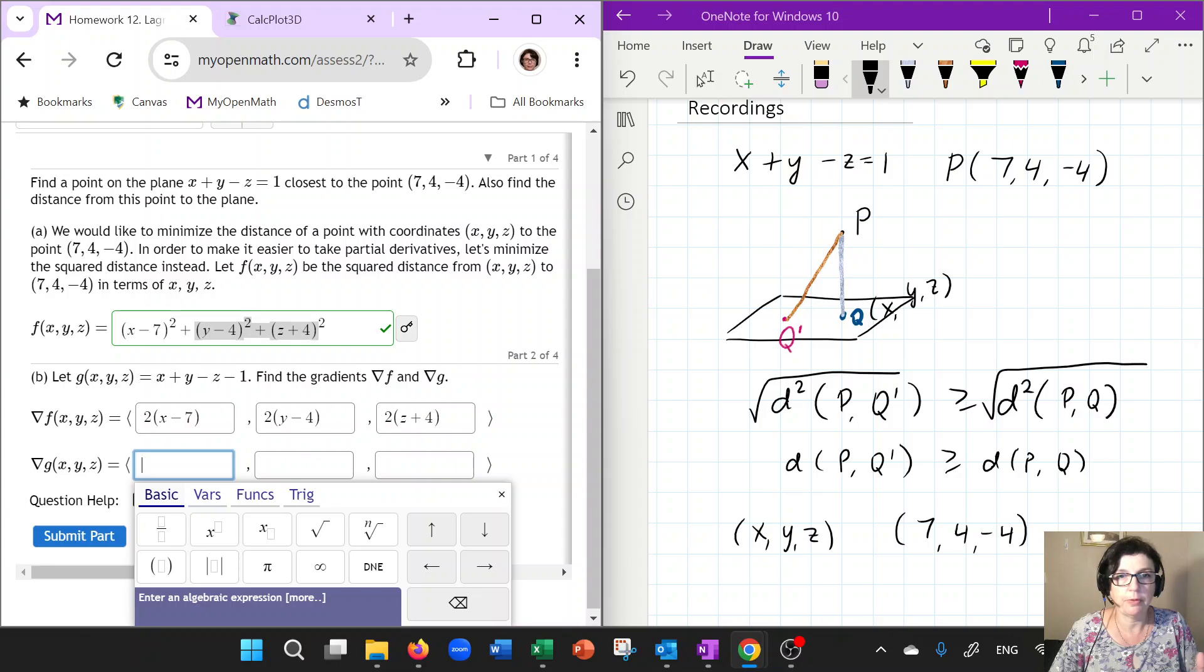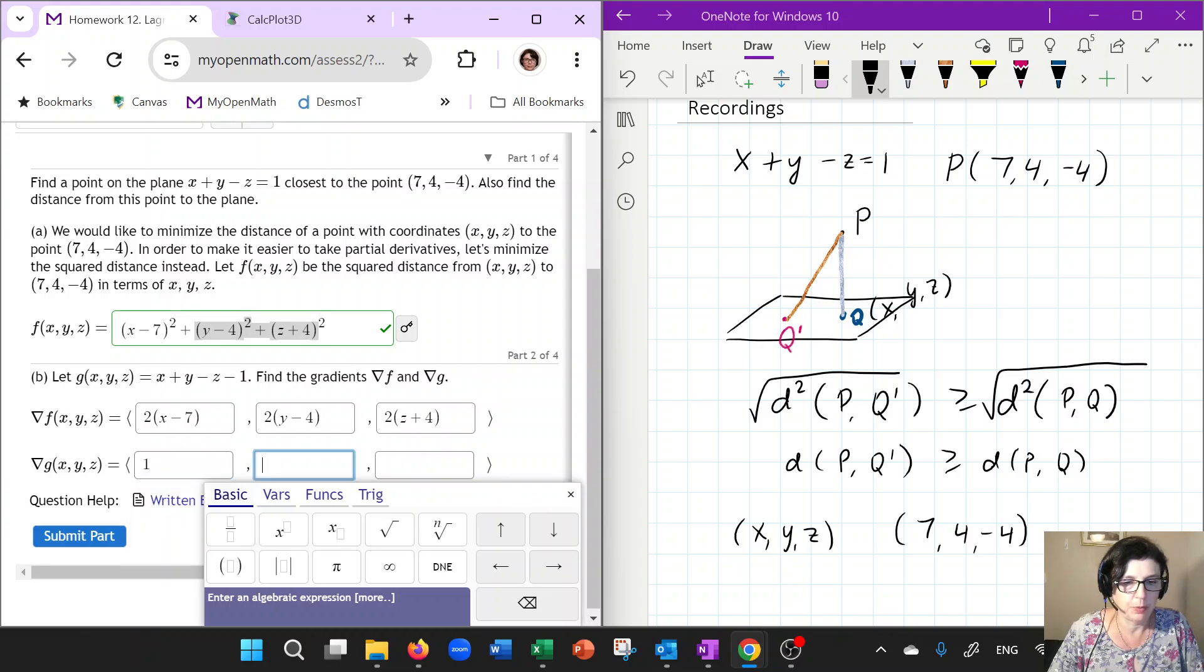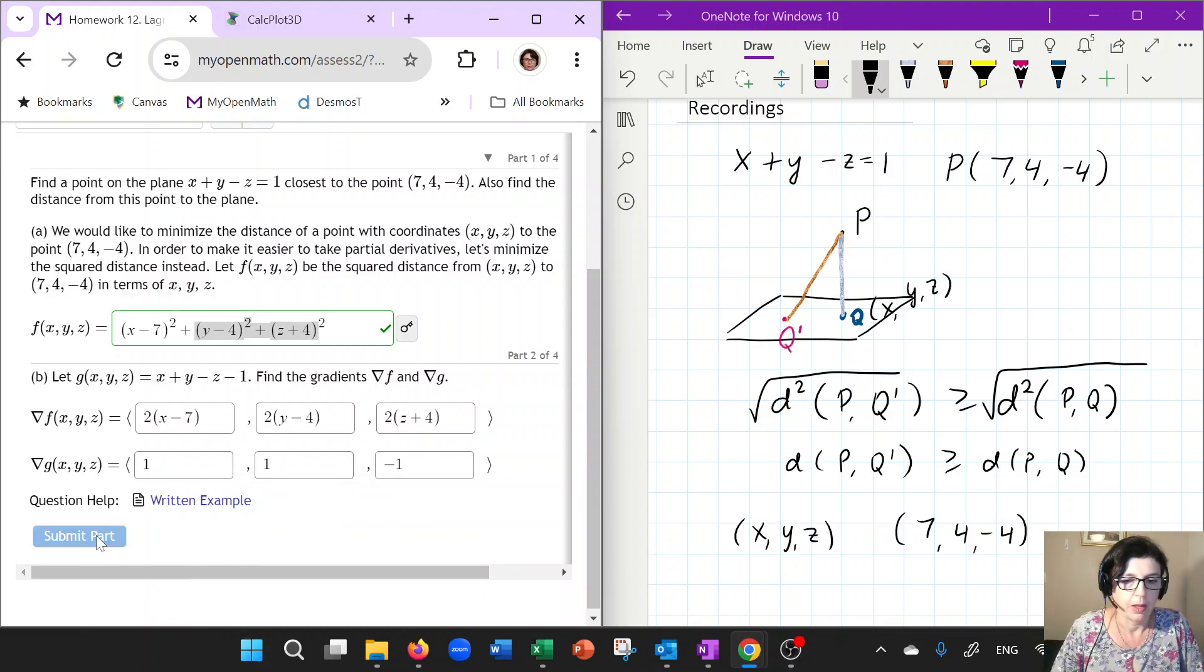Now let's find the gradient of X plus Y minus Z, which is the constraint, because that point Q has to belong to the plane. Well, it's very easy because derivative of X is 1 and Y minus Z do not have an X, so they drop out. Same thing will happen here. That's going to be 1 for Y derivative, but for Z will be negative 1.